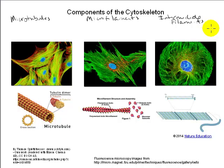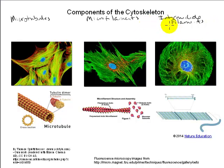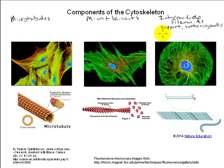These cytoskeletal fibers are made up of different types of proteins and all contribute to maintaining cell shape, but they're also associated with distinct functions. The intermediate filaments are so named because they're intermediate in size between the microfilaments and microtubules. They are more static in structure and are typically associated with structural support, maintaining cell shape, and tethering cellular organelles. Intermediate filaments are made up of a number of different types of fibrous proteins — keratin, for example — that wind around one another to form strong rope-like fibers.